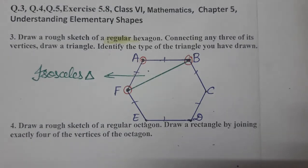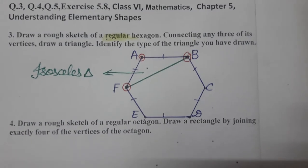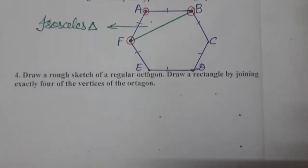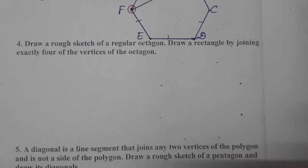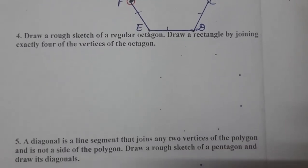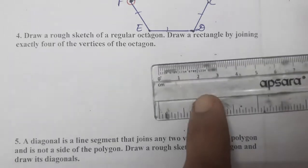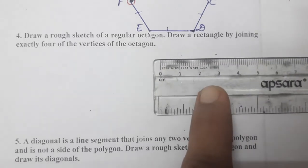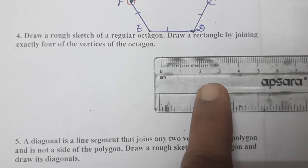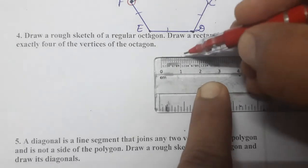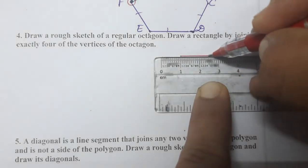Now comes question number 4. Draw a rough sketch of a regular octagon. This time we have to make an octagon. An octagon means it contains eight sides.